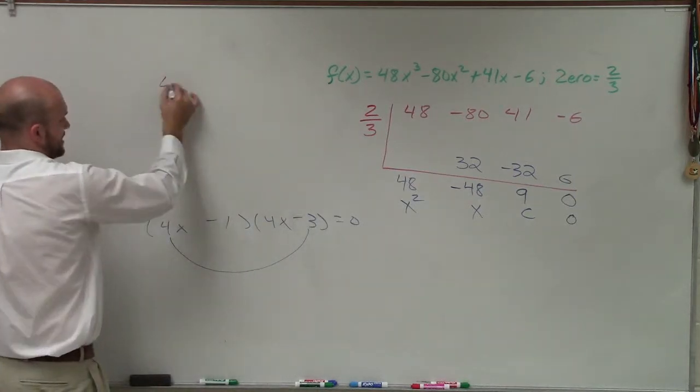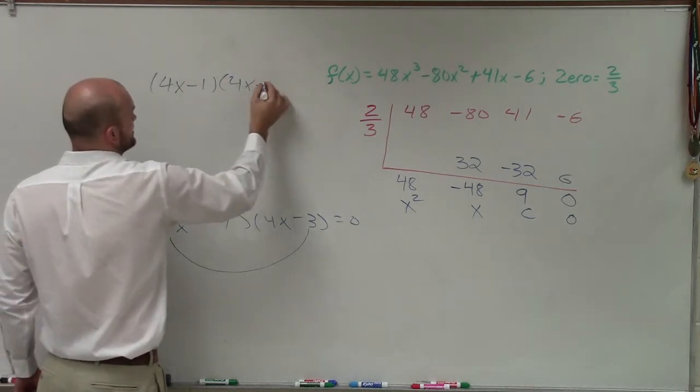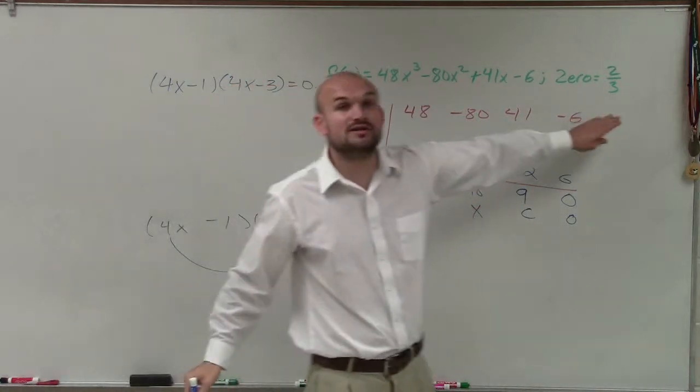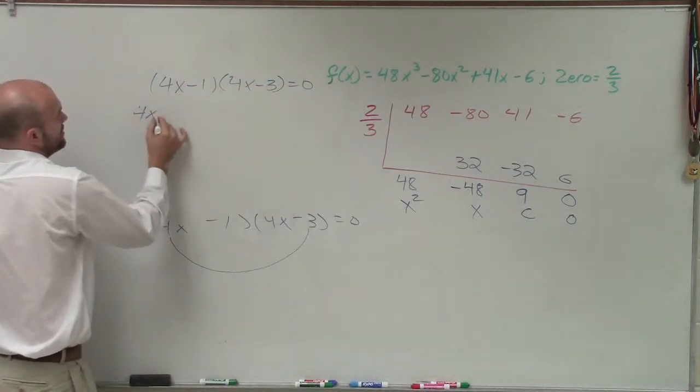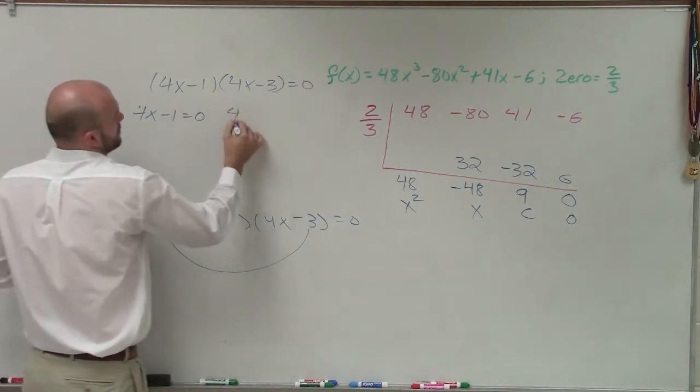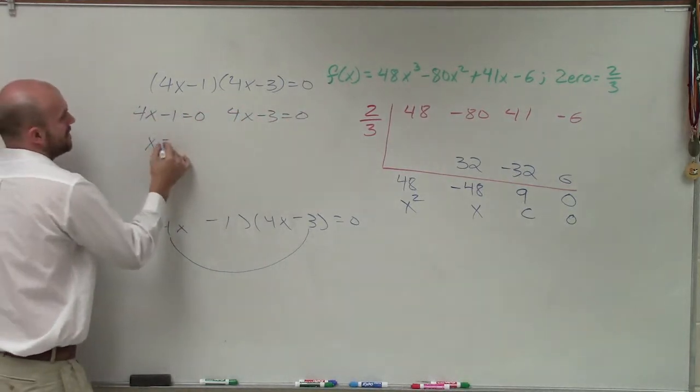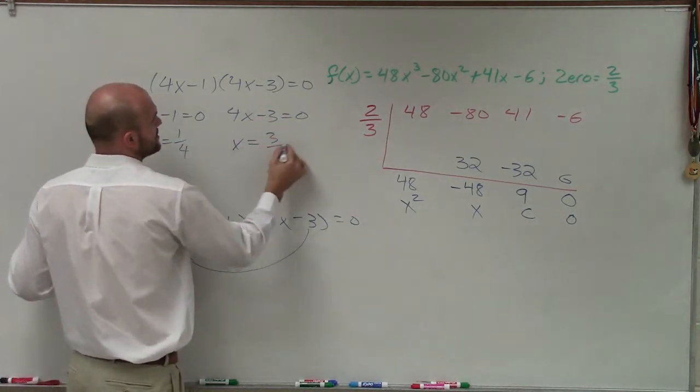All right. So therefore, I'll just write this back up here. 4x minus 1 times 4x minus 3 equals 0. So we already know one zero is 2-thirds. To find my remaining zeros, now I can apply the zero product property and now solve. So add 1, divided by 4, x equals 1 fourth. Add 3, divided by 4, x equals 3 fourths.